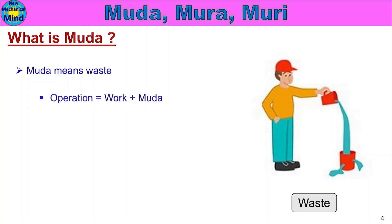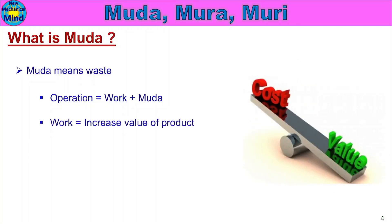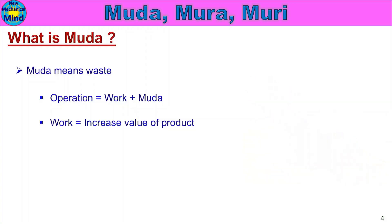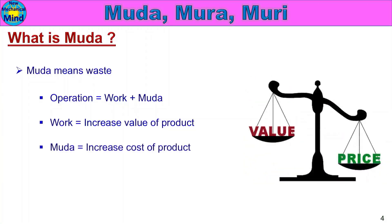Operation is equal to work plus Muda. If operation equals process, it will be work plus Muda. Work is equal to increase in value of product. If product is being machined or processed, it will increase the value of the product. That means work increases value, while Muda is equal to increasing cost of the product.